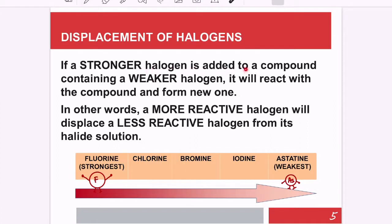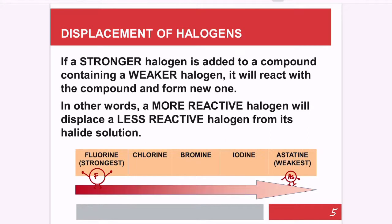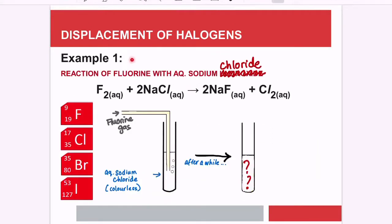Displacement of halogens: if a stronger halogen is added to a compound containing a weaker halogen, it will react and form new products. From fluorine to astatine, fluorine is the strongest and astatine is the weakest, so the stronger one will take over the position of the weaker one.